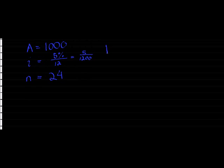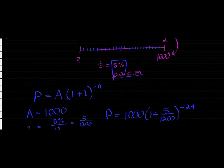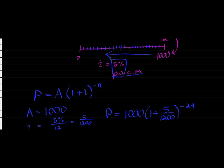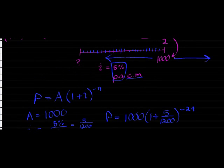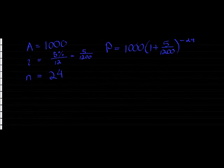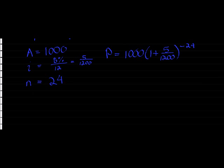And now that into my formula gives me 1000 rand times (1 plus 5 over 1200) to the power of negative 24. The negative is almost suggesting the direction in which I'm going on my timeline. It means I'm going in that direction. If I were to have a positive there, I would be going in that direction. In other words, asking what would that 1000 rand be worth after 2 years. Now I'm going back in time with 2 years prior.